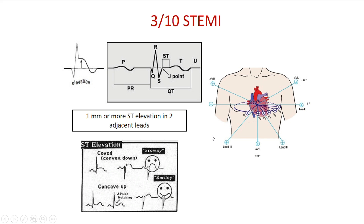Observing STEMIs is fairly straightforward — we look for ST segment elevation from the isoelectric baseline along the lead. When we are talking about 1 mm or more ST elevation, we are looking for the J point shift. The J point is the turning point between the upswing of the S wave and the ST segment, and this movement is what we refer to as ST elevation. For a finding to be significant in terms of ischemia, it must be present in two adjacent leads or more.